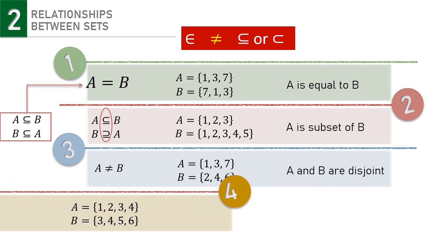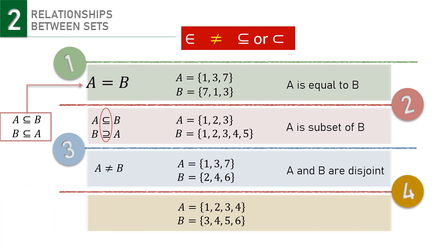Lastly, we have this condition. The two sets have some elements in common, which are 3 and 4, but some other elements peculiar to each. So A and B are neither equal nor disjoint, and neither set is a subset of the other.